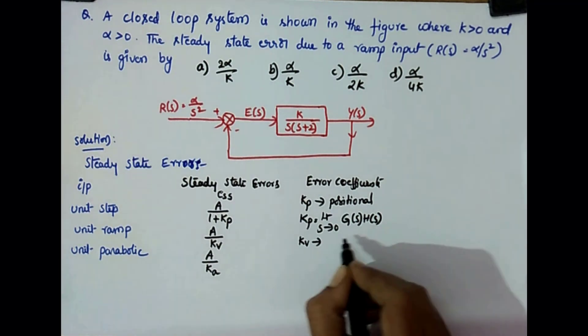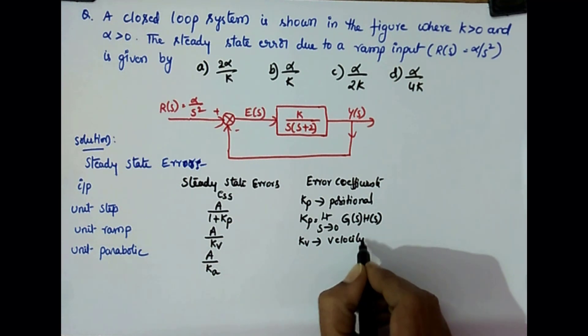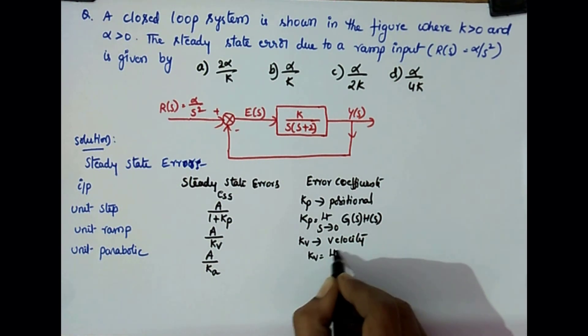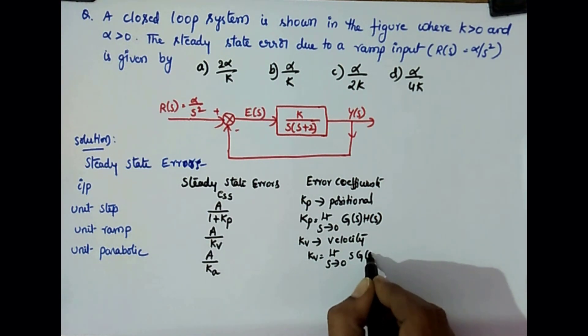Kp formula is limit S tends to 0, S into G(s) into H(s).